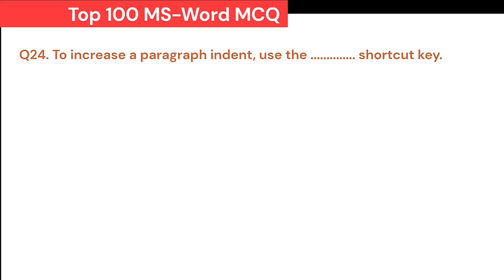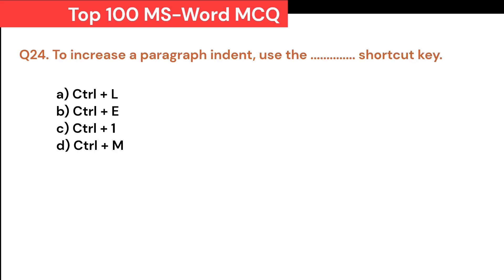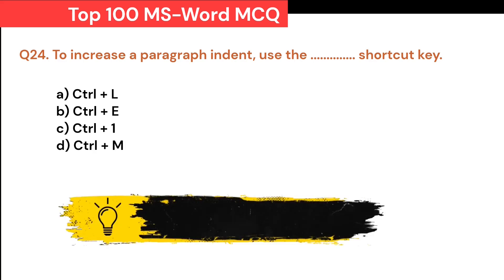To increase a paragraph indent, use the Dash shortcut key: A. Ctrl+L. B. Ctrl+E. C. Ctrl+1. D. Ctrl+M. Correct answer is D. Ctrl+M.